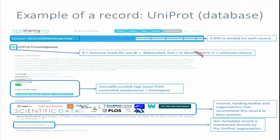About what type of data you can find on FAIRsharing — this is an example of one record, in this case a database. We don't have the source code; there is a link to the original resource. We keep track of a set of metadata about the resource: general information, manually curated tags describing the taxonomic rank for biological resources and knowledge domains, and a list of recommendations from organizations or journals which recommend a specific resource. This record is maintained by the organization who actually maintains the resource itself, which is something we tend to encourage.